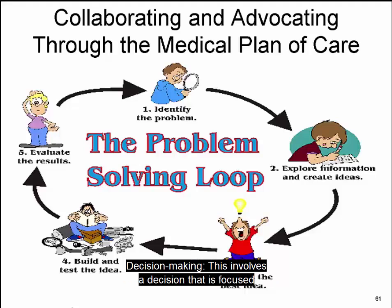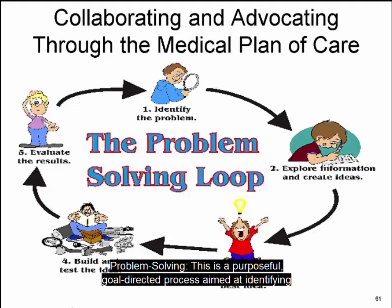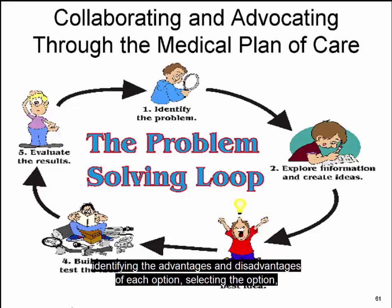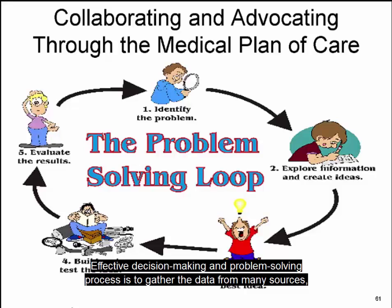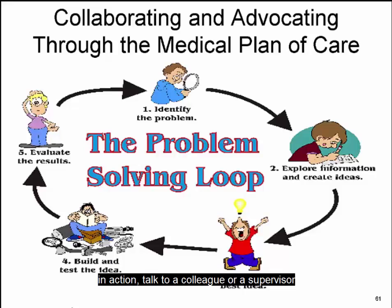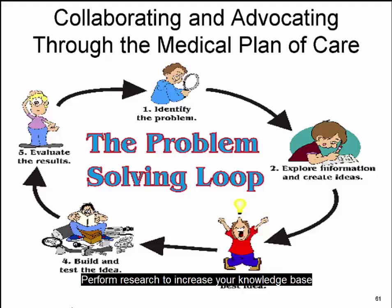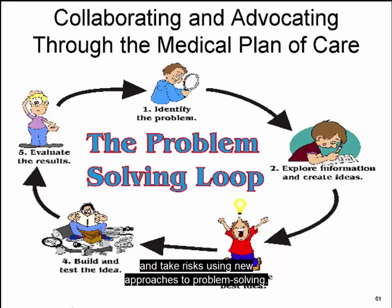Decision-making involves a decision focused on trying to solve an immediate problem. Problem-solving is a purposeful, goal-directed process aimed at identifying and selecting options as part of problem-solving, plan change, or improvement. Decision-making steps include defining the objectives, identifying the options, identifying the advantages and disadvantages of each option, selecting the option, and implementing and evaluating the result. Effective decision-making and problem-solving involves gathering data from many sources, learning different approaches, observing positive role models, talking to a colleague or supervisor who is an effective problem-solver, performing research to increase your knowledge base, and taking risks using new approaches.